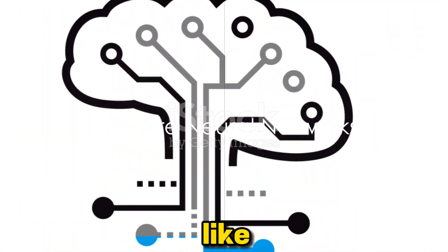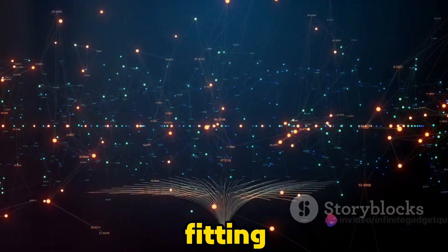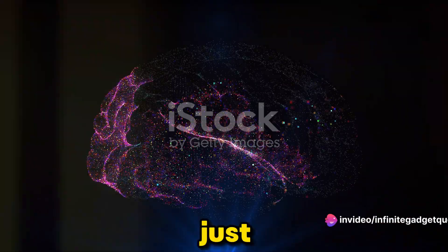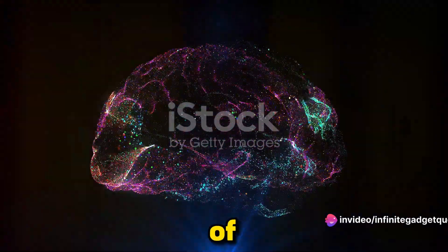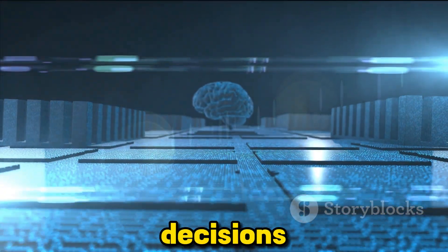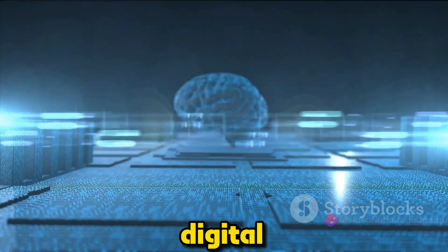Neural networks are like the digital brains of computers. This isn't just a catchy metaphor, it's a fitting description of what these fascinating structures truly are. Just as our brains consist of billions of neurons, firing and connecting to process information and make decisions, neural networks aim to replicate this complex process in a digital environment.